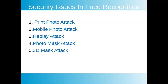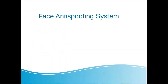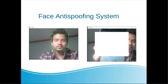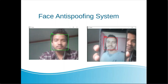Now it's time to look into the solutions we can adopt to prevent such attacks. For preventing these attacks we need a face anti-spoofing system. A face anti-spoofing system is a biometric system capable of determining whether a face comes from a real person or a fake one. If real, it labels it as 'real'; if fake, it labels it as 'spoof'.